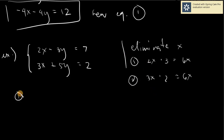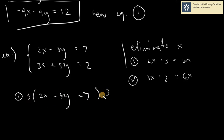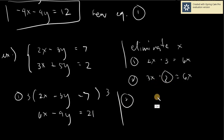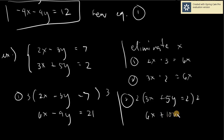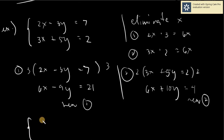So for equation 1: 2x minus 3y equals 7, multiplied by 3 on both sides, gives 6x minus 9y equals 21. For equation 2: 3x plus 5y equals 2, multiplied by 2, gives 6x plus 10y equals 4. So the new system is 6x minus 9y equals 21 and 6x plus 10y equals 4, and now you can eliminate x.